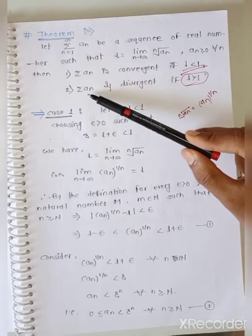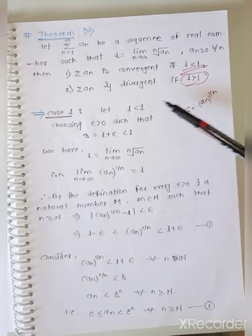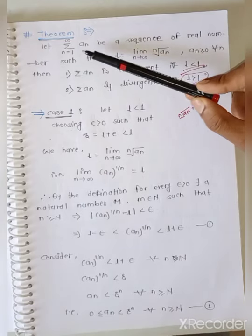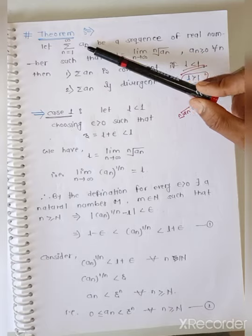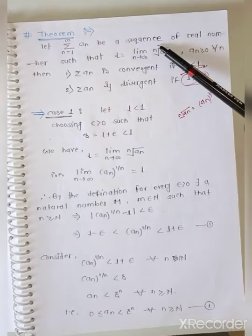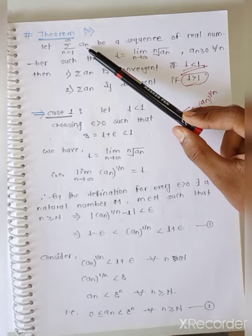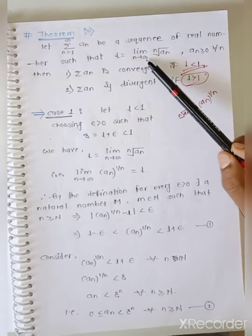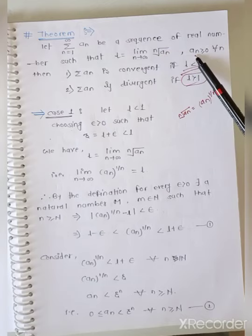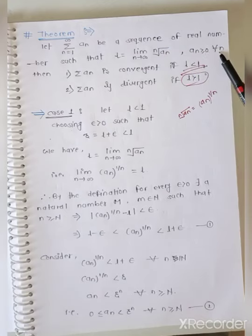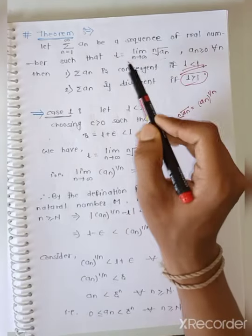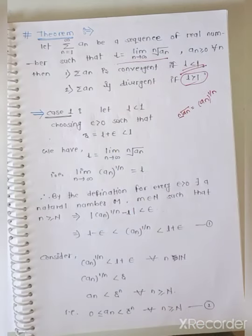Second condition: summation a_n is divergent if L is greater than 1. Let us re-read the theorem statement. Let summation n equals 1 to infinity a_n be a sequence of real numbers. Such that L equals the limit as n tends to infinity of the nth root of a_n, where a_n is greater than or equal to 0 for all n.